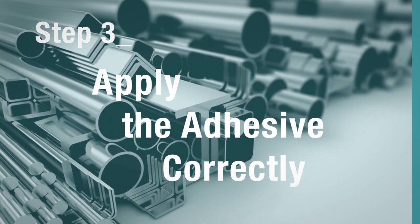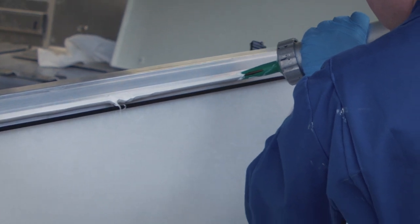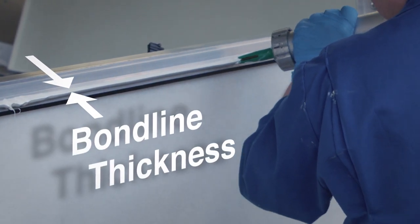Step 3: Apply the adhesive correctly. At this point, ensure you have the correct bond line thickness and you've followed the application instructions.